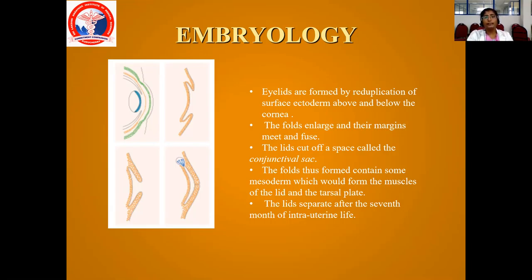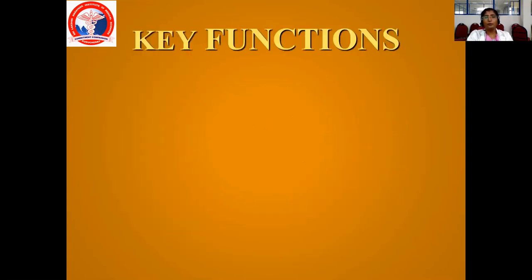Initially the lids fuse together, whereas the lids separate after the seventh month of intrauterine life. Before birth itself, the lids separate. Otherwise it will lead to fusion of the lids and the baby cannot open the lids. At the seventh month of intrauterine life, the lids separate and form two lids — the upper lid and lower lid.